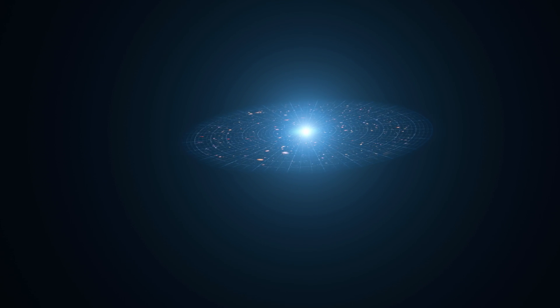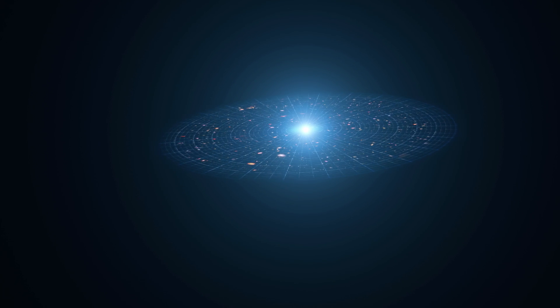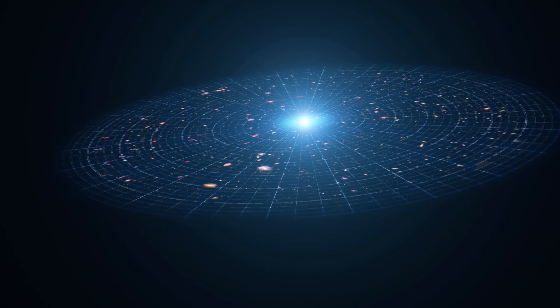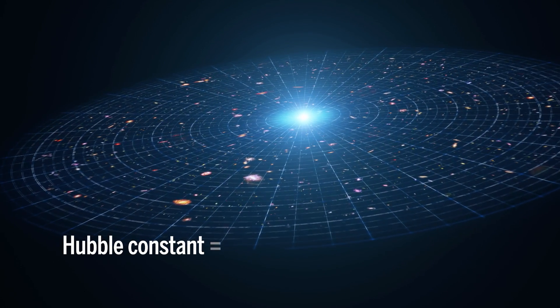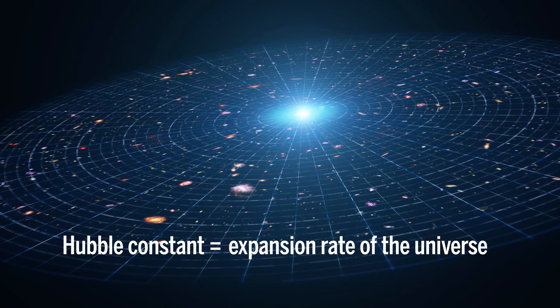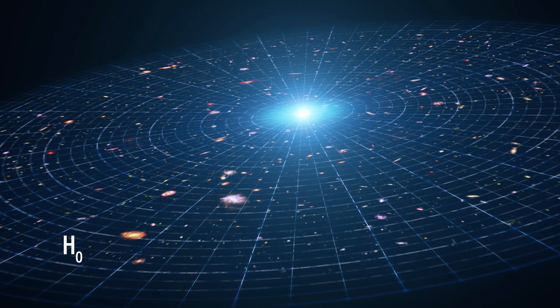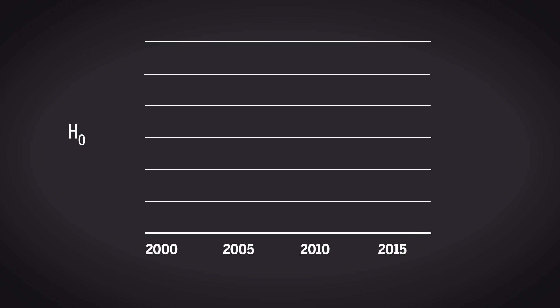Ever since Edwin Hubble discovered that the universe is expanding, there has been a great debate about the speed of this expansion, also called the Hubble constant. In 2000, scientists thought they had reached a consensus, with the Hubble constant at about 72. But since then, two methods of calculating the expansion rate have gotten farther and farther apart, and some scientists think it's too big of a difference to just be a statistical fluke.